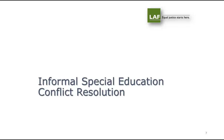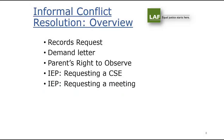Turning to informal conflict resolution, on this list of five issues — requesting a CSC, requesting records, a demand letter, the right to observe, and requesting a meeting — other than requesting a CSC, these activities could occur at any point in your case. They are likely to occur at the beginning but are resources and options you have throughout.